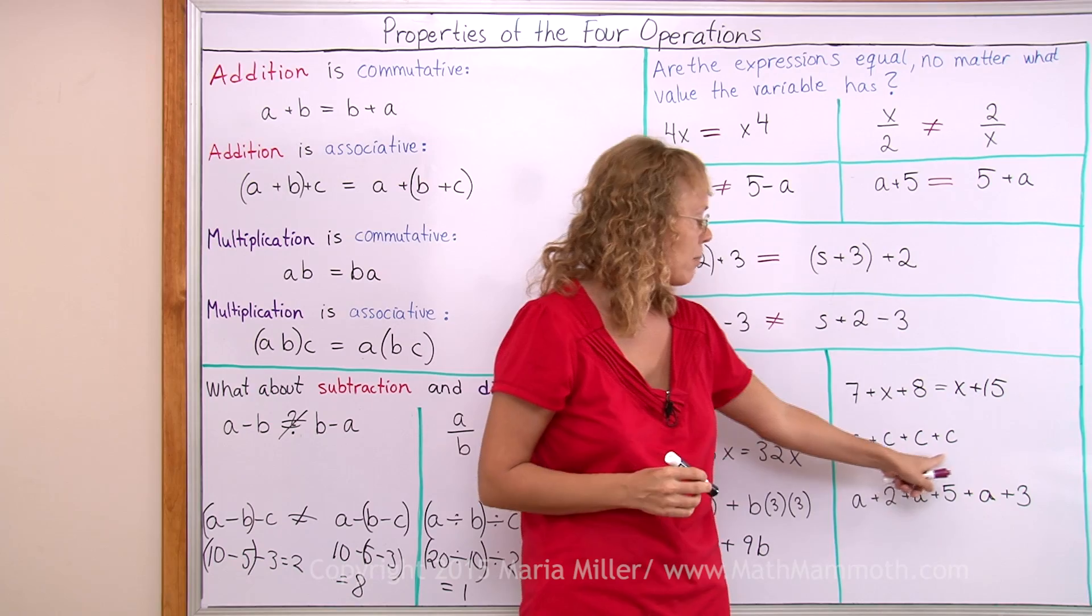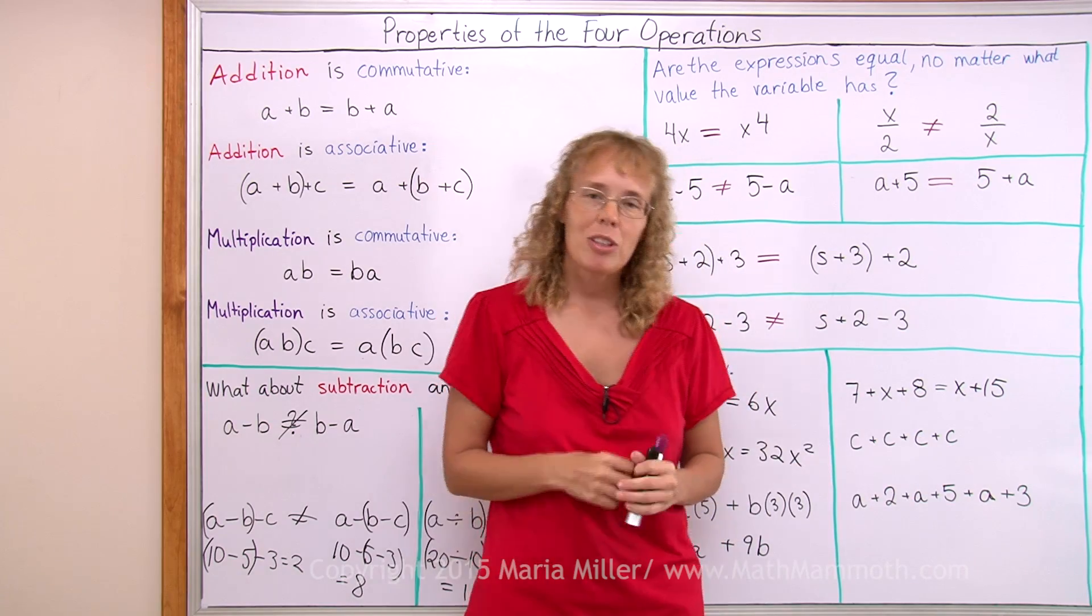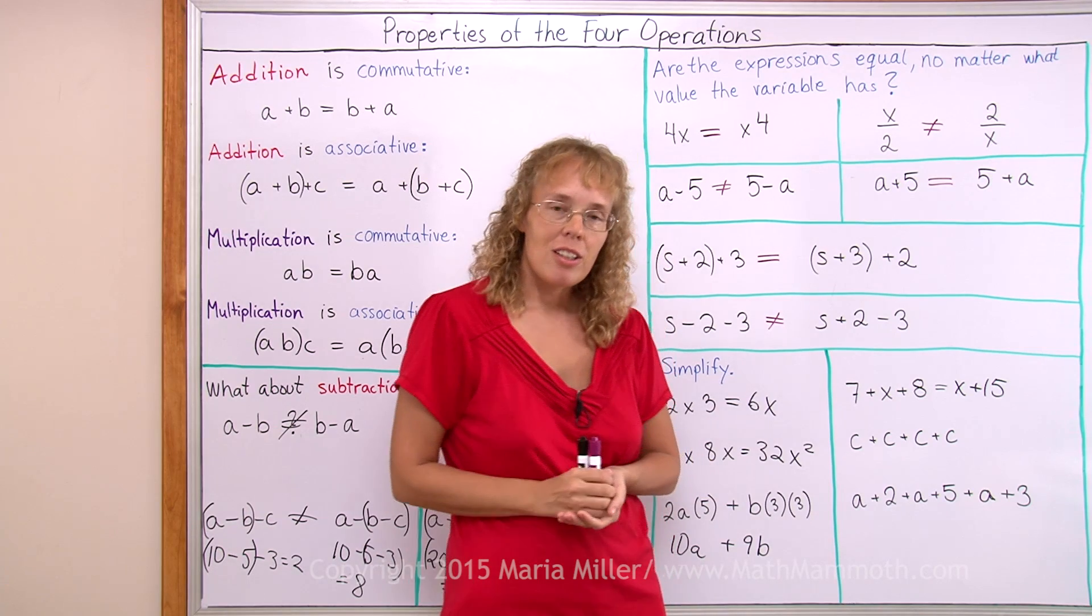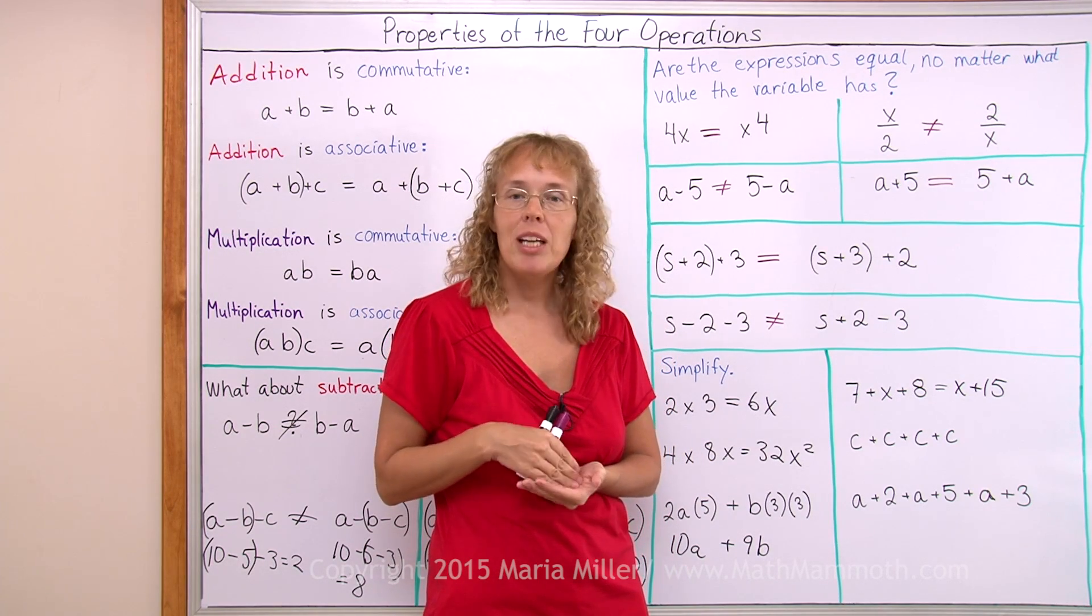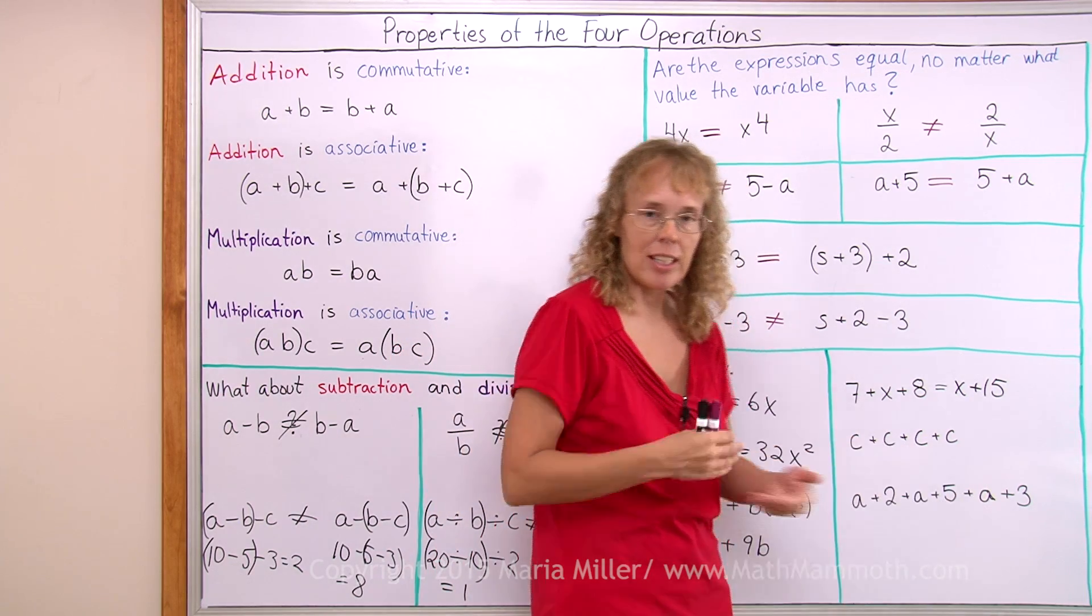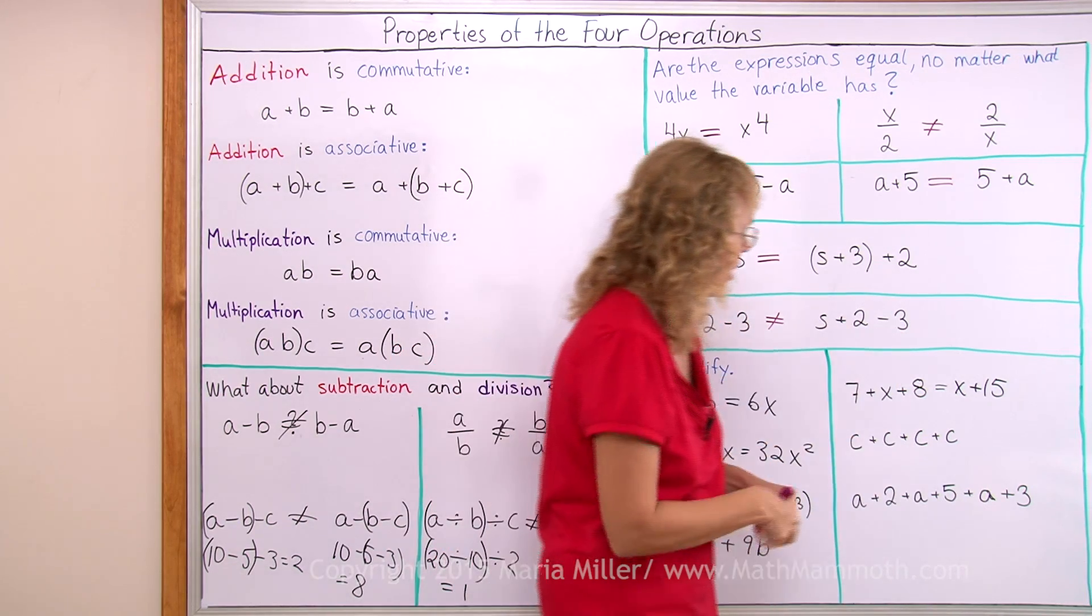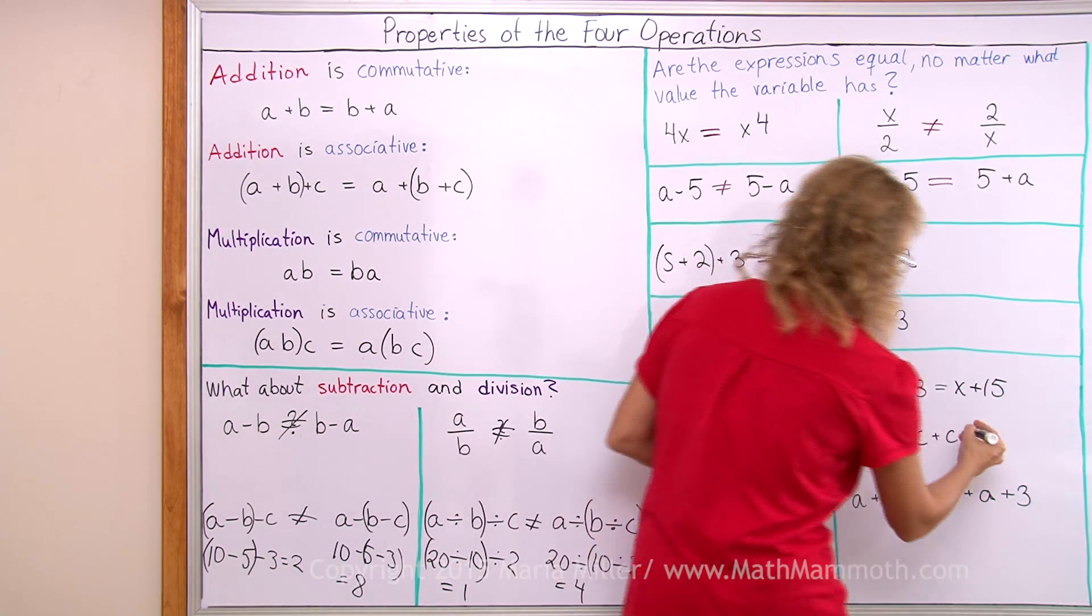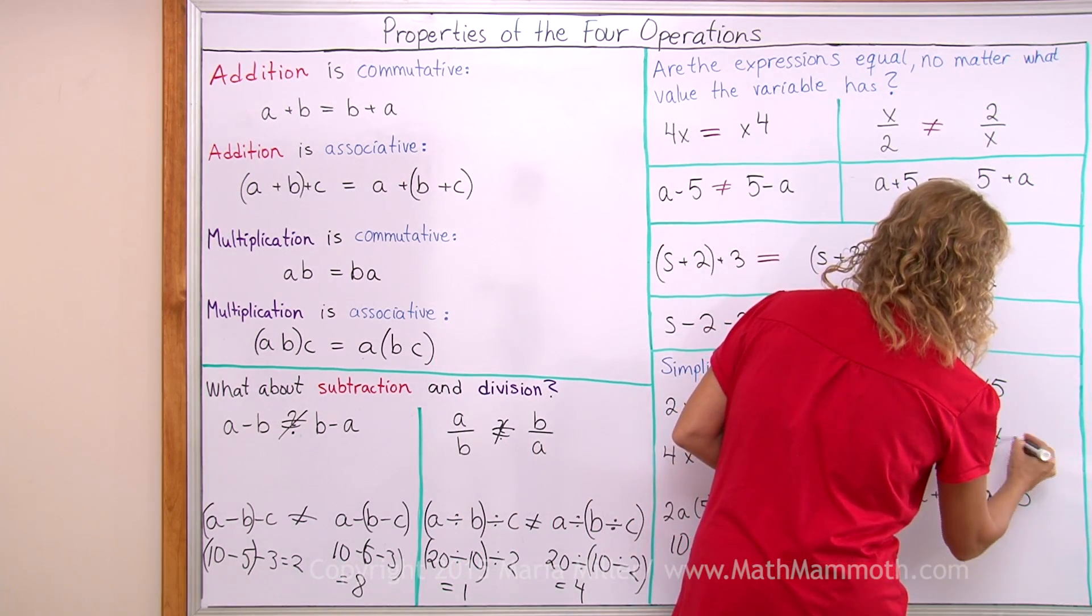Here's c plus c plus c plus c. Now, I'm not going to use any of these properties now. I'm just going to use the definition of multiplication. Multiplication is repeated addition. Here I have a repeated addition. I add c multiple times. So I can write it as a multiplication. And that is shorter, and simpler, 4c.